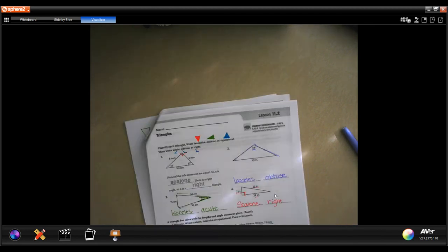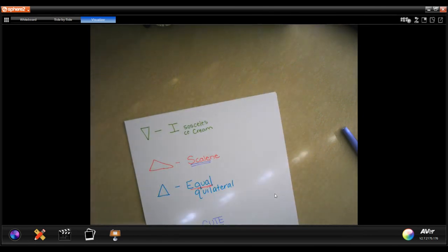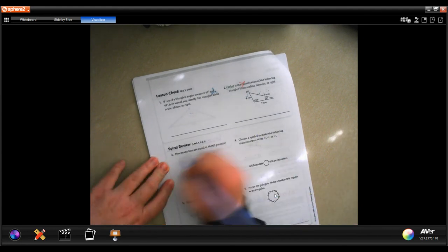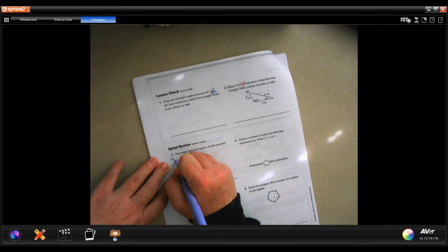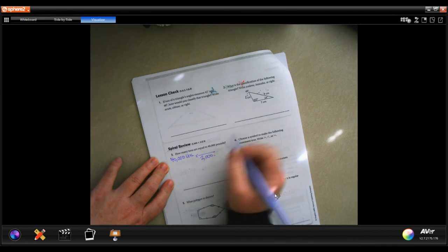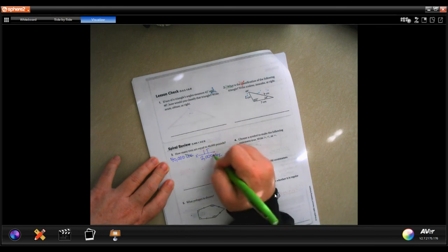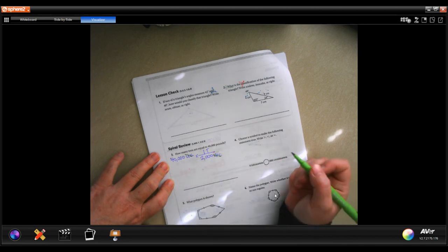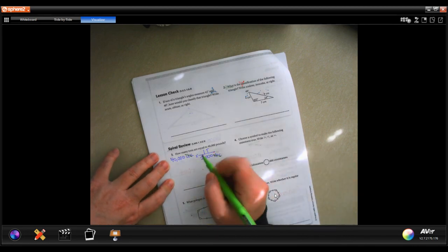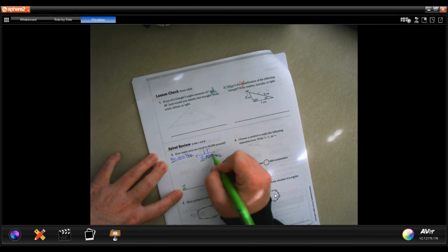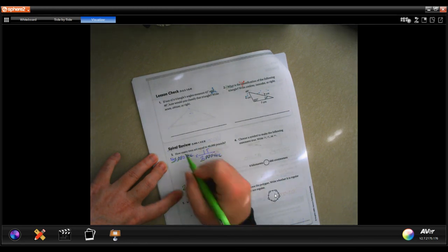Alright, so let's go on to the back. You guys are going to do the lesson check just like always, and we're going to go down into the spiral review. It says how many tons are equal to 40,000 pounds? We're going to start with what we know, which is 40,000 pounds. We're going to say 2,000 pounds goes into one ton. We can cross out pounds, we can cross cancel that. And now 40,000 is on top and 2,000 is on bottom, which means we need to divide. Two goes into four two times, and zero. It is 20 tons.